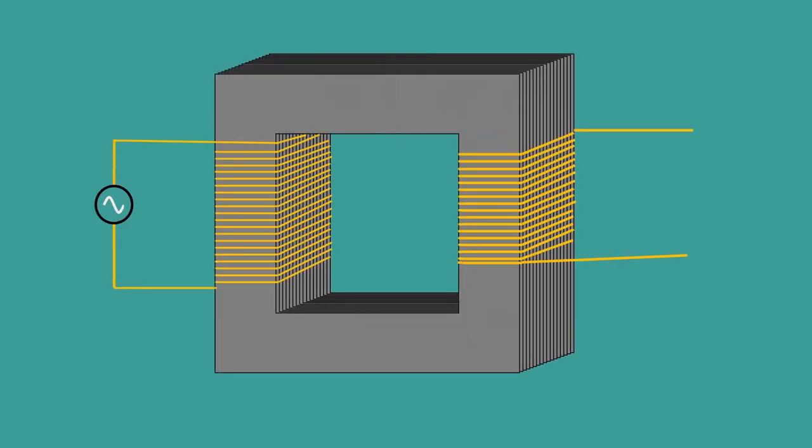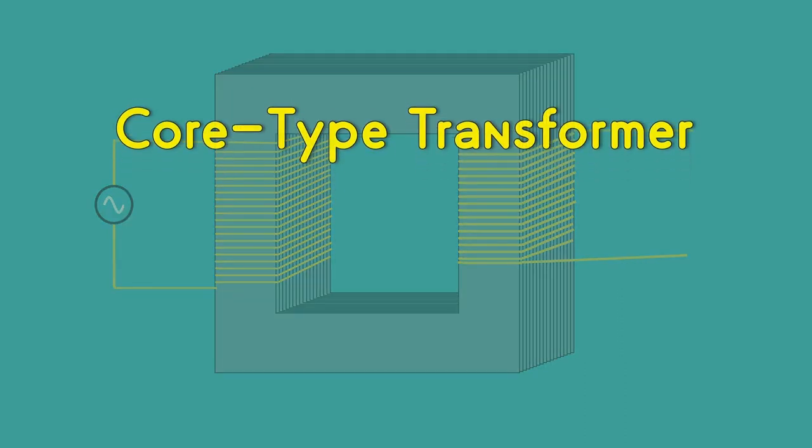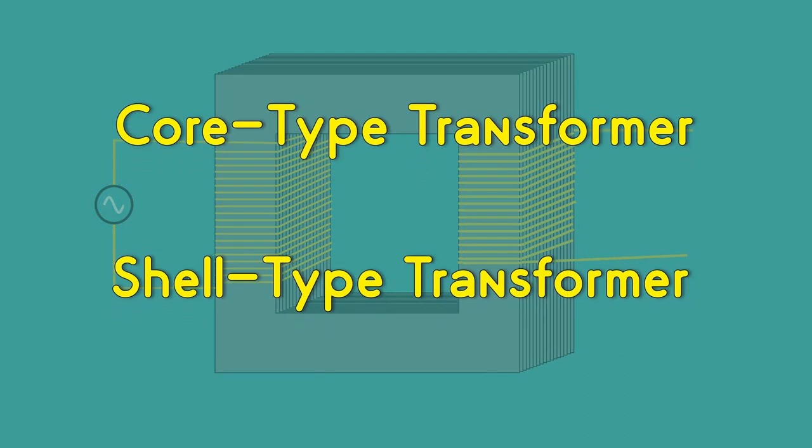According to the construction of the core and the winding arrangements, the transformer can be divided into two types. The core type transformer and the shell type transformer.